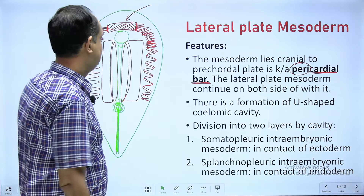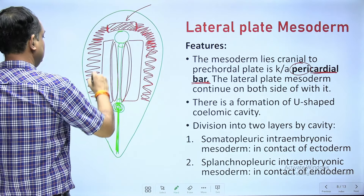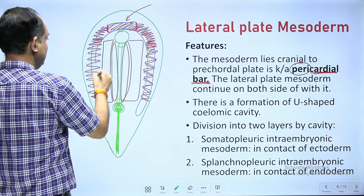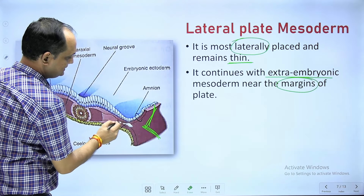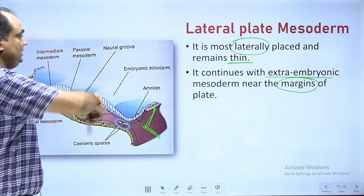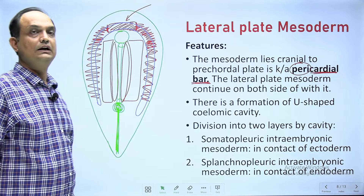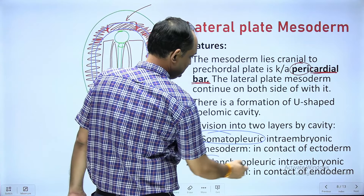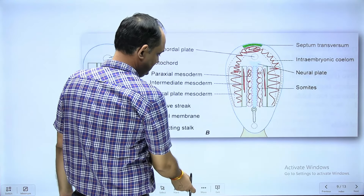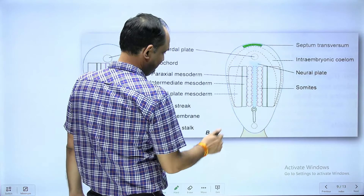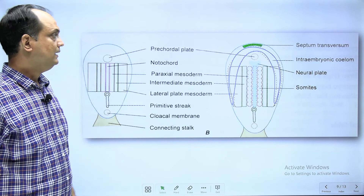In the next step, within the lateral plate mesoderm along with the pericardial bar, a U-shaped cavity forms inside this mesoderm. You can appreciate this cavity formation in the diagram — it is a U-shaped cavity. When this U-shaped cavity forms, it is known as the intra embryonic coelom.